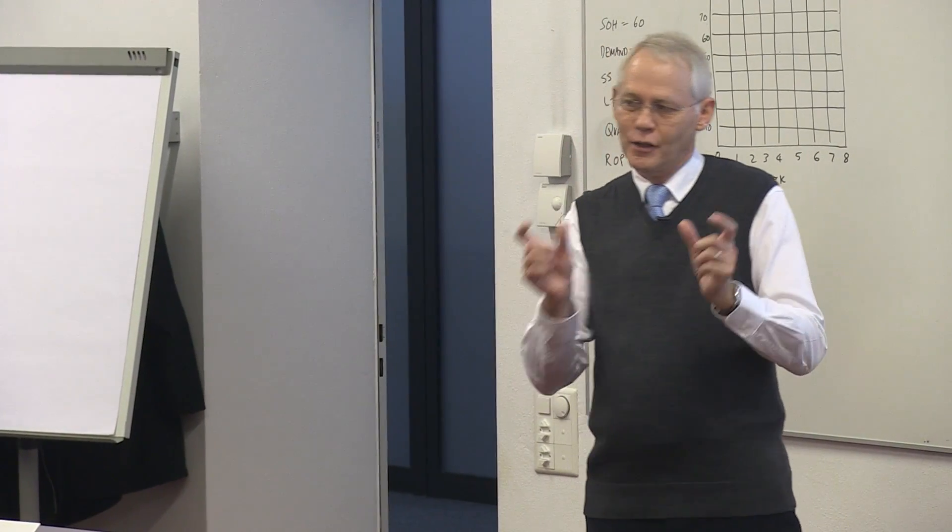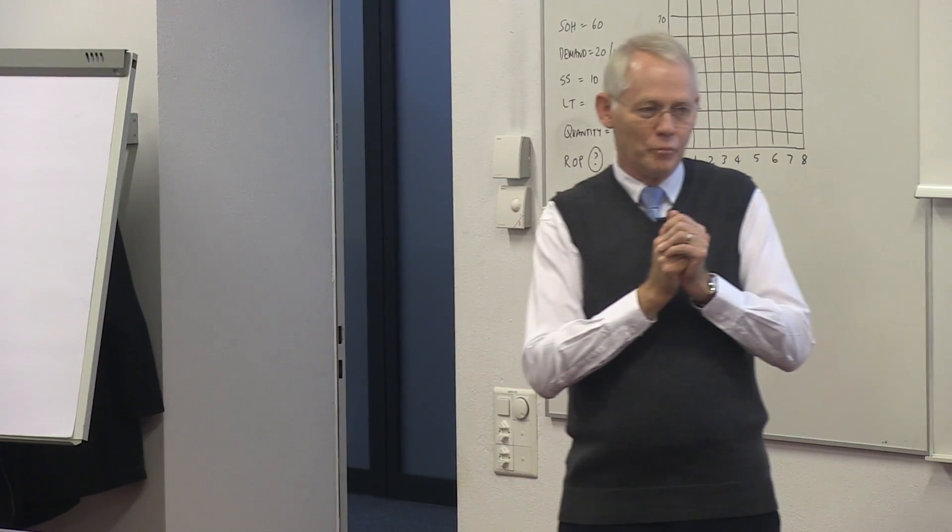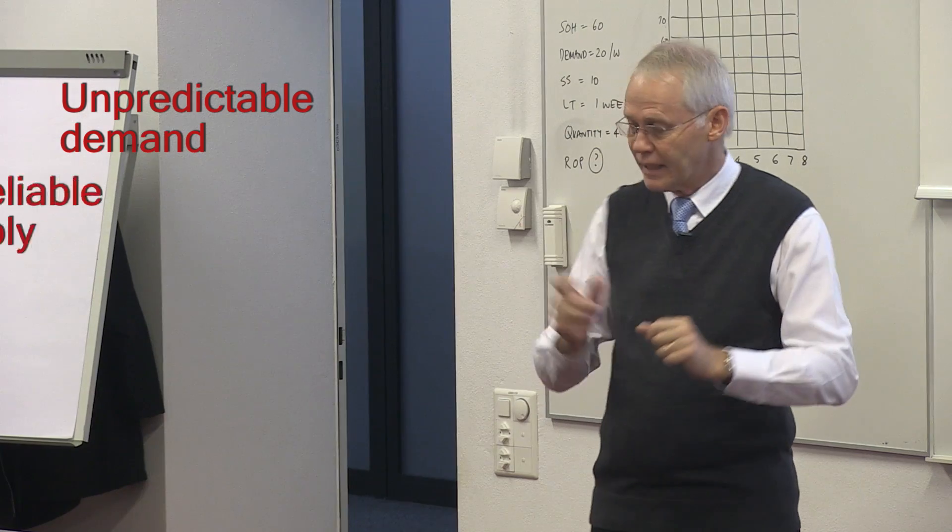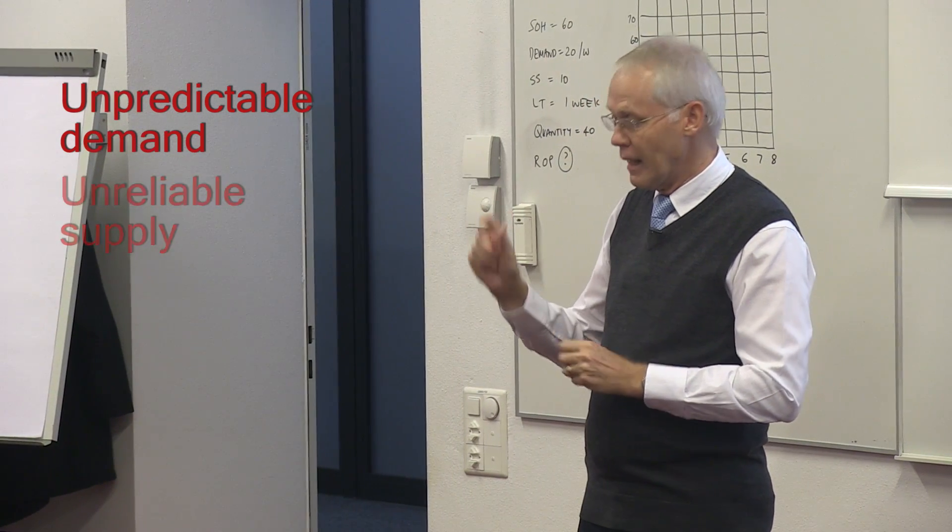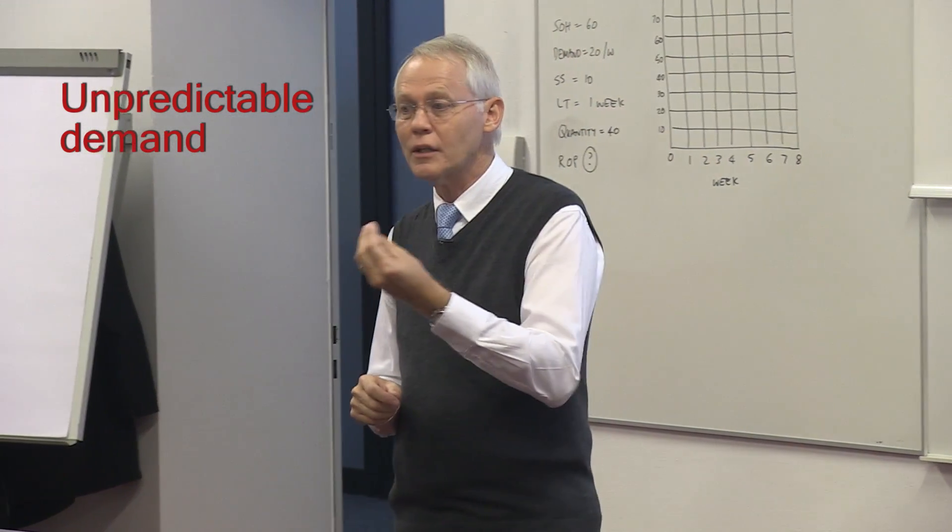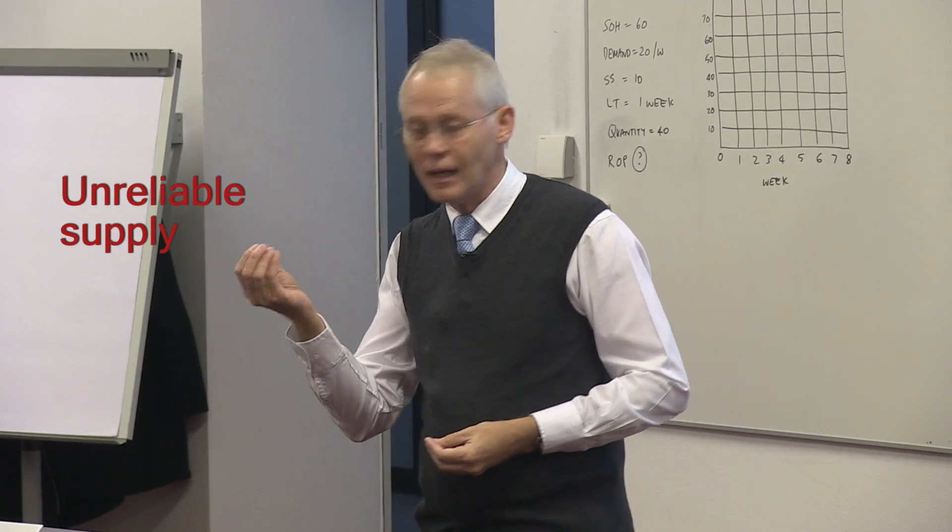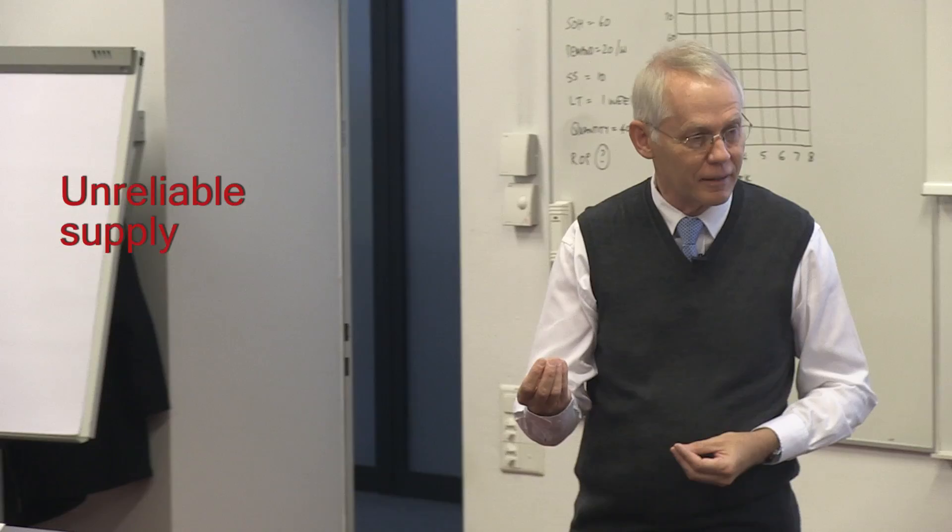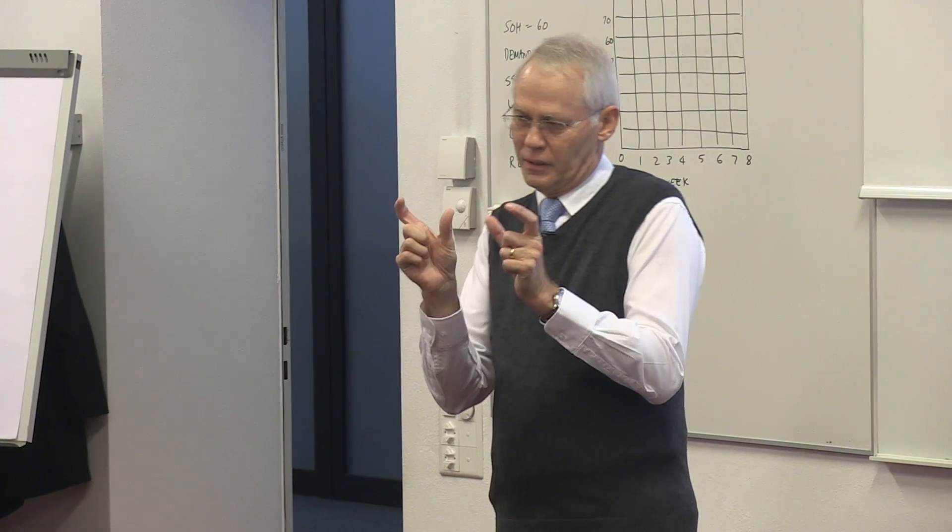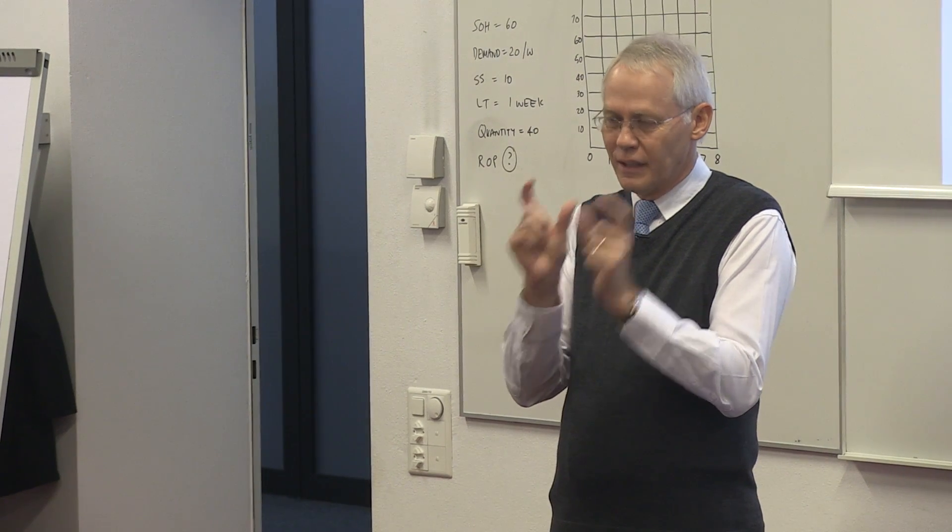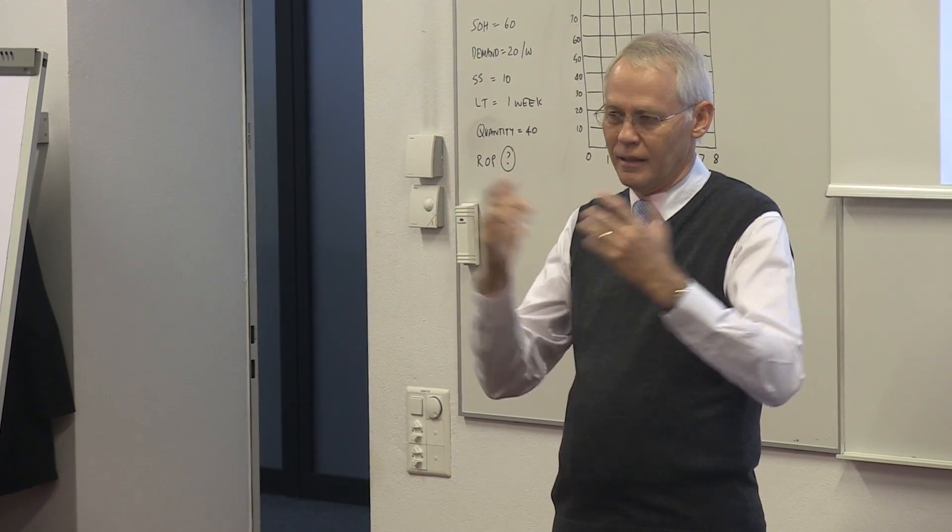I use the terminology which I think is important to understand now: unpredictable demand and unreliable supply. Unpredictable demand because I do not know what the demand necessarily will be. Unreliable supply - I do not know when my suppliers will deliver. And those two components form the basis of safety stock which we carry as inventory.